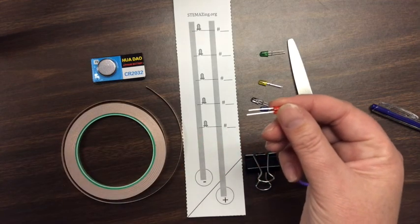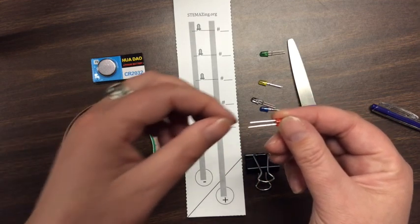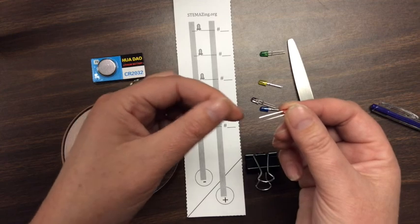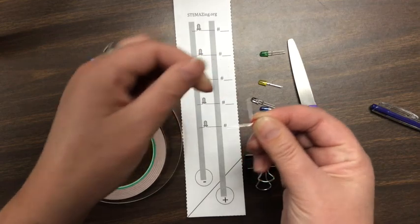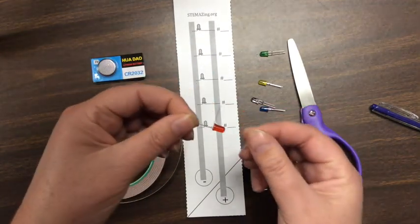In order to be able to tell those two leads apart, the easiest thing to do is take the negative lead for each of your LEDs and bend it straight out at a 90-degree angle like this.